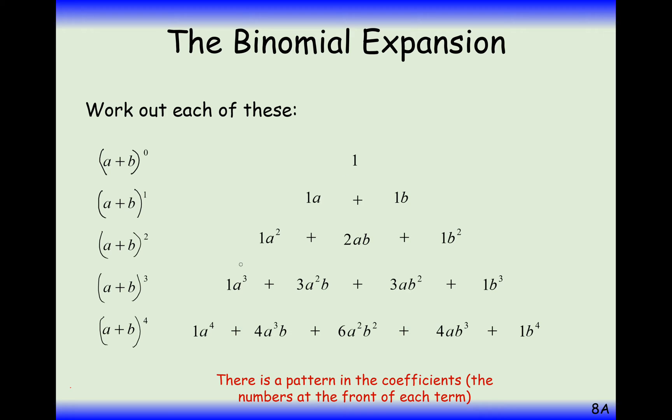Now, what we notice here is a pattern to do with the numbers that are appearing in front of these letters here. And as you'll see, if we want to get the number below, we add the two numbers from the diagonal left and the diagonal right above it. So 1, add 2, is 3. For this term down here, 3, add 1, is 4. And for this term here, 3, add 3, is 6.